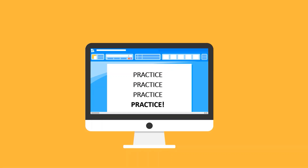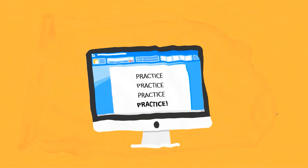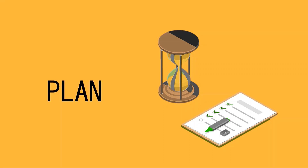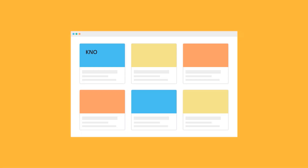The best source to practice from are the SAT 2 books. Now let's come to the planning. This planning should be done before the test and even during the test. First, you should know your strengths — out of those four sections, which three would you be attempting? Then decide beforehand.